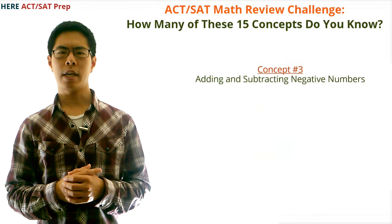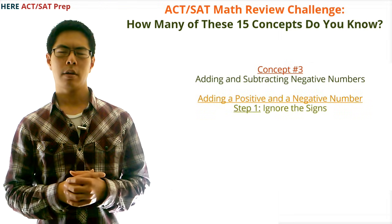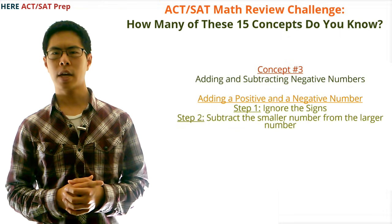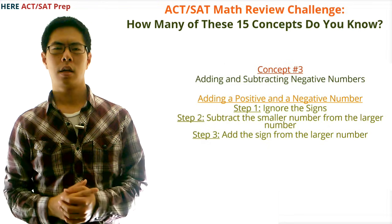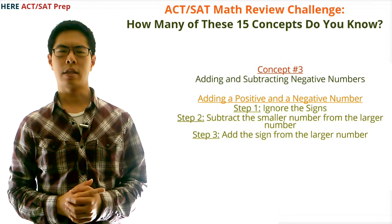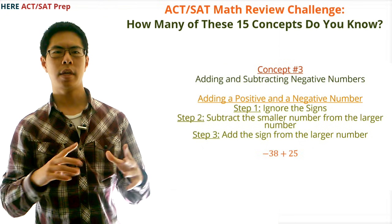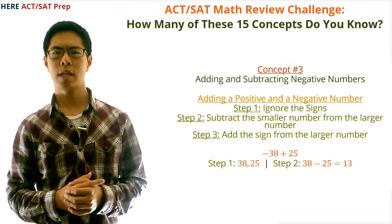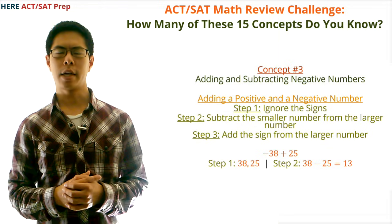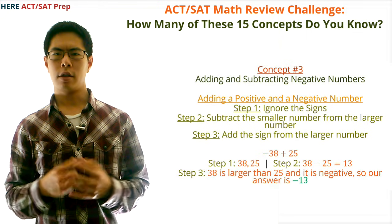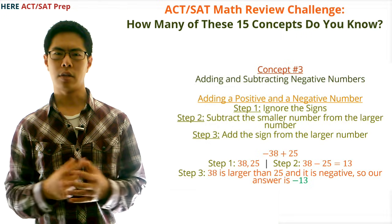Concept number three: adding and subtracting negative numbers. To add a positive and a negative there are three steps. First, ignore the signs. Second, subtract the smaller number from the larger number. Third, add the sign from the larger number — if the larger number is positive the answer will be positive, and if the larger number is negative the answer will be negative. For example, with negative 38 plus 25: ignore the signs to get 38 and 25, subtract to get 38 − 25 = 13, and since 38 is negative, the answer is negative 13.